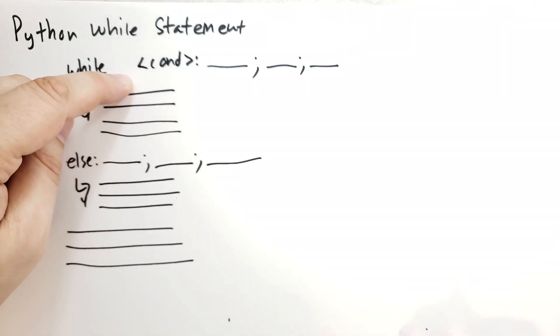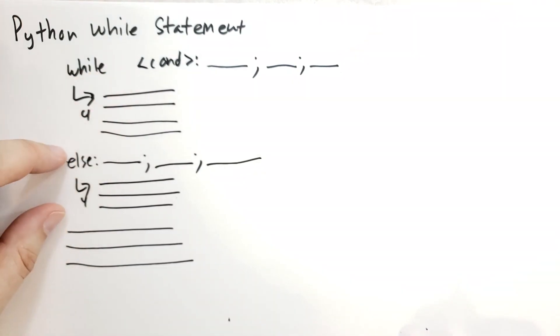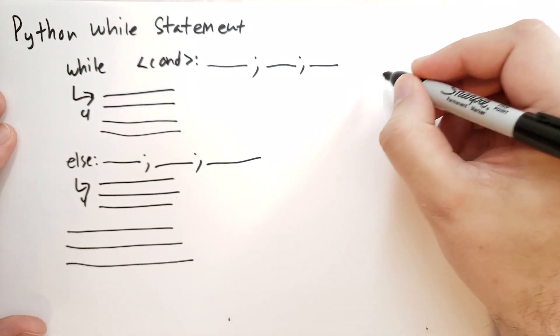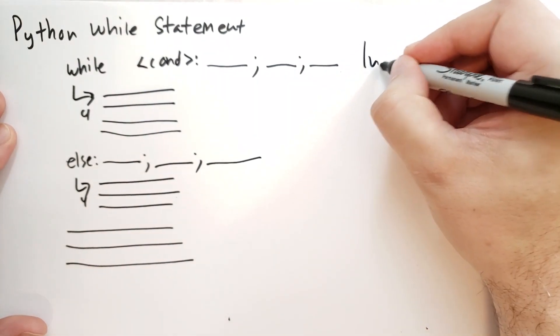If the condition is false, then it will run the else block and then continue with the statements following the while statement. There are two kinds of infinite loops in Python, in pretty much every program.